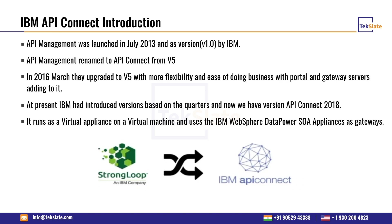IBM API Connect sits in the DMZ zone, acting as a proxy and as a security layer for existing services. Inside this product, you can also create and deploy services — those services can be any type of API.